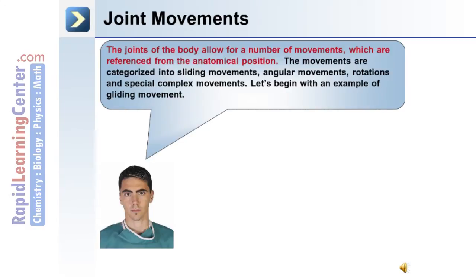The joints of the body allow for a number of movements, which are referenced from the anatomical position. The movements are categorized into sliding movements, angular movements, rotations, and special complex movements.